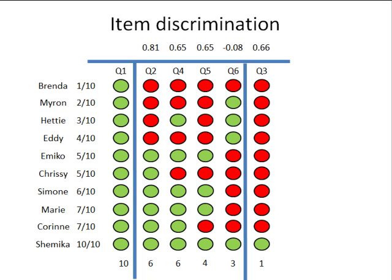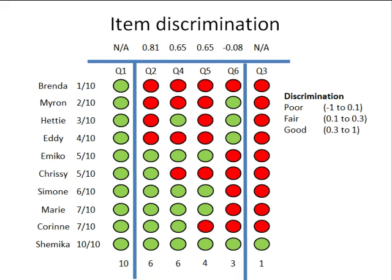Question 1 is also not very good at predicting the total score because everybody got it right. In fact, the way discrimination is calculated means it gives no answer — the item is just too easy, and in a way it might be a lead-in item. Overall we're looking for items with discrimination bigger than 0.1, which Blackboard describes as fair, and bigger than 0.3 is good. These are fairly arbitrary numbers but give a way of comparing items to see which are useful at discriminating students who did better from those who did worse.